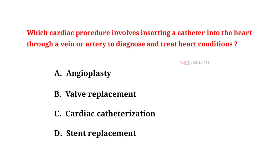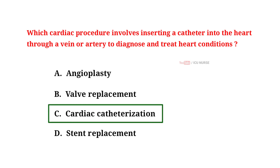Which cardiac procedure involves inserting a catheter into the heart through a vein or artery to diagnose and treat heart conditions? A. Angioplasty. B. Valve replacement. C. Cardiac catheterization. D. Stent replacement. And the correct answer is C. Cardiac catheterization.